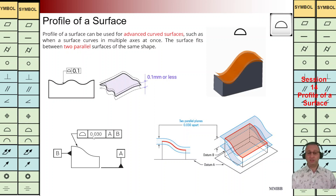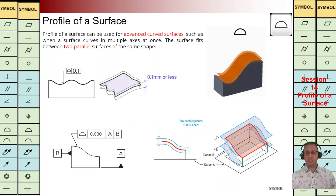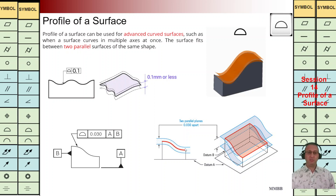In the second example, we have the surface profile symbol here, and TZ is 0.03, and we have two datums A and B. By having these two datum planes, we are going to eliminate five degrees of freedom, and then we are going to have two parallel surfaces with the same shape to check the shape of that.